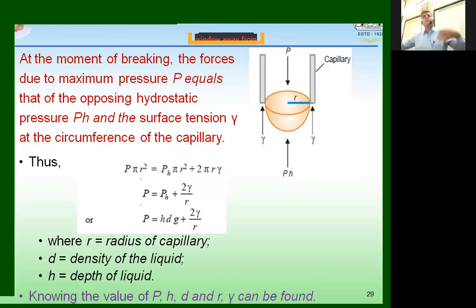P we have determined from the values of the manometer. So, we know the value of pressure. We can determine the height to which the capillary was dipped into the liquid. d is the density of the liquid which can be determined using pycnometer or density bottle. We know the value of gravitational force or acceleration due to gravity and we can determine the radius which was being used.